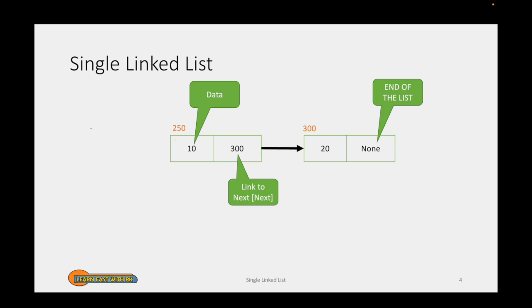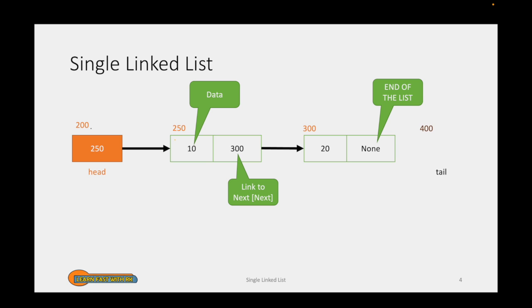As per the implementation of the node, the last node's next may be stored with either None or null. Assuming these are the two nodes in the single linked list, head is a pointer that holds the address of the first node. The first node resides at 250, hence head contains the value 250. We also have a tail pointer which holds the last node's address. The second node, stored at location 300, is the last node, so the tail pointer holds the value 300.